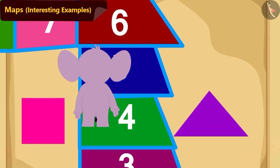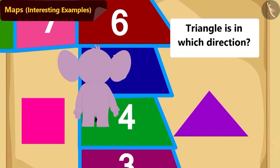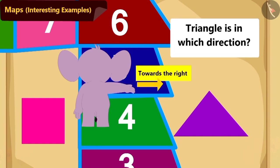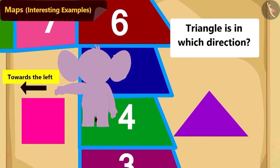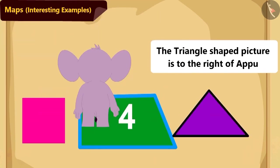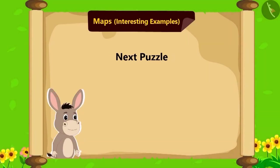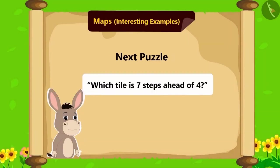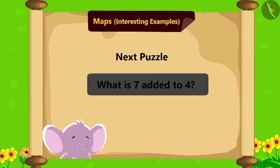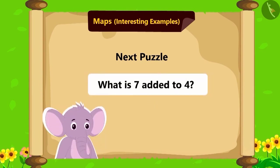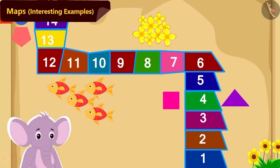Children, can you tell whether the triangular-shaped picture is to Appu's right or to his left? Absolutely correct — the triangular-shaped picture is at Appu's right side. Bholla's next puzzle is: which tile is seven steps ahead of tile number four? How much is seven added to four? Eleven. So seven steps ahead of four is tile number eleven.